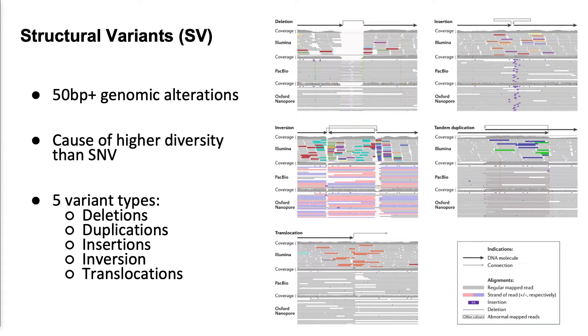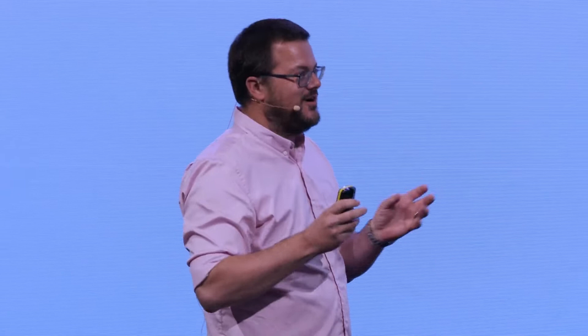We can differentiate them between five different types: deletions, duplications, insertions, inversions, and translocations. We can identify them utilizing split reads, where two or more regions of the same read align to different places in the human genome, for example.